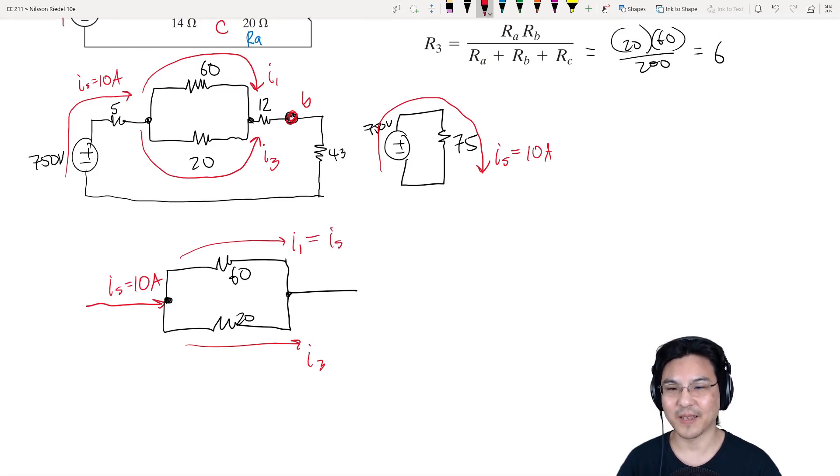Let's just use the current divider equation. So this was 60, this was 20. It's a current divider equation. IS times 20 over 60 plus 20. So that's one fourth of 10 amps, which is 2.5 amps. And then over here, current divider, I source times 60 over 60 plus 20. So that's three fourths of 10 amps, which is 7.5 amps.